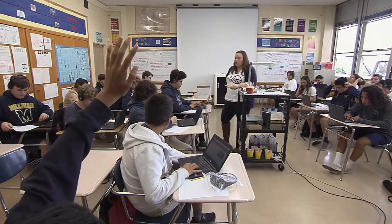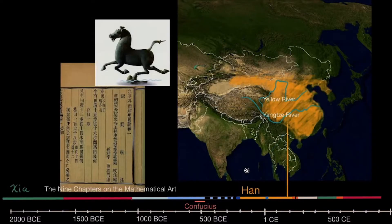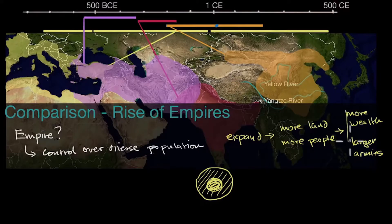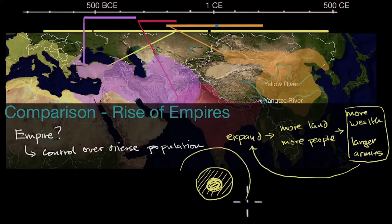Today we are studying the rise and fall of specific empires. I'm doing the Han Dynasty, which lasted about 400 years. Instead of having to open a big textbook and read for a long period of time, in Khan Academy you can just go to a video that summarizes a huge section of a unit in a five to ten minute video.